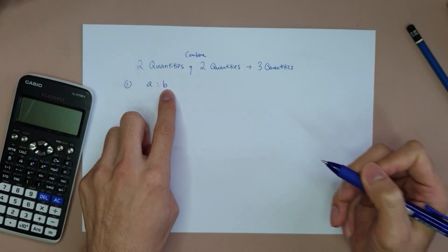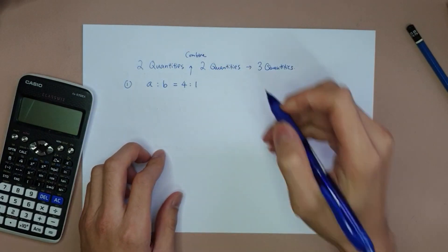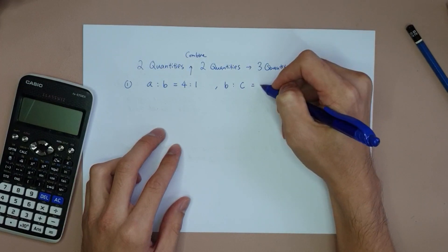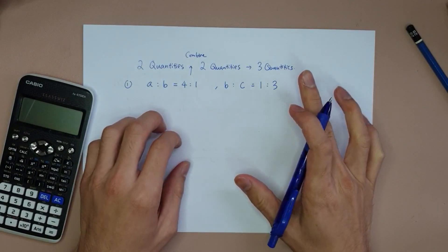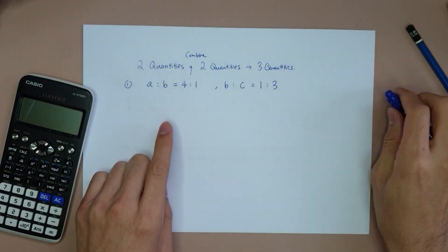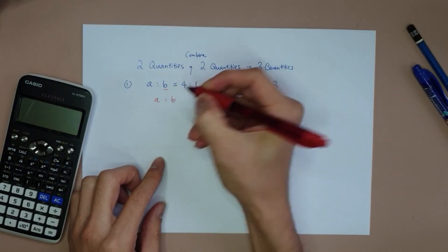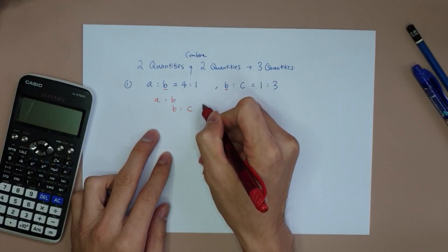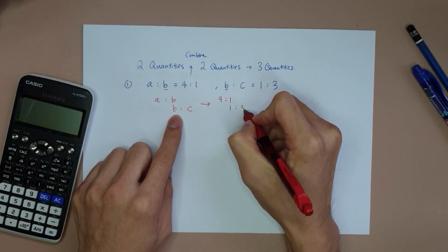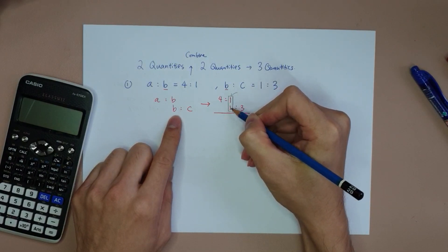So A to B — that's the first ratio. Let's say A to B is given as 4 to 1. My next ratio is B to C, stated as 1 to 3. This is something very simple. In order to combine two two-quantity ratios into a three-quantity ratio, we compare the same things — the common quantity goes in the middle. So A to B is 4 to 1, and B to C is 1 to 3. The important thing is to make sure the middle number is the same.